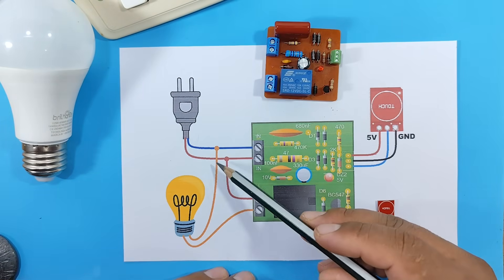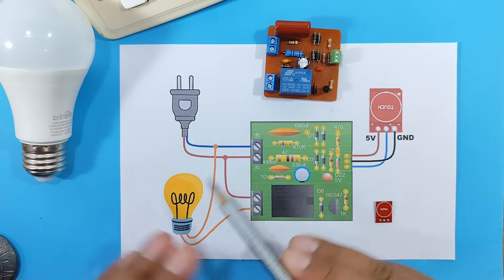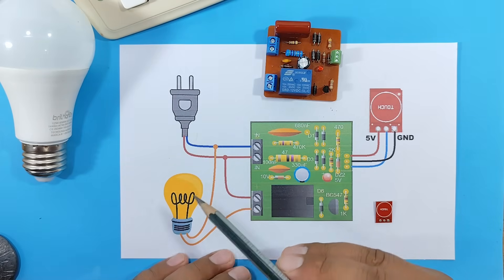The other contact of the light bulb will go directly to the neutral wire. In this way, we'll avoid electrocution when handling our light bulb.